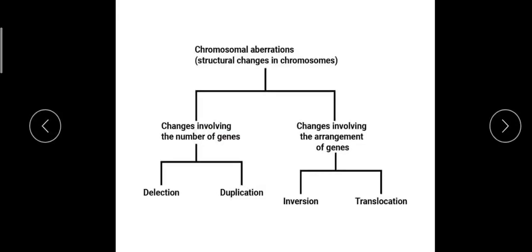Structural aberrations may be of two types: intra-chromosomal or inter-chromosomal. Intra means within a chromosome and inter means between chromosomes. Intra-chromosomal aberrations are also called homosomal aberrations.